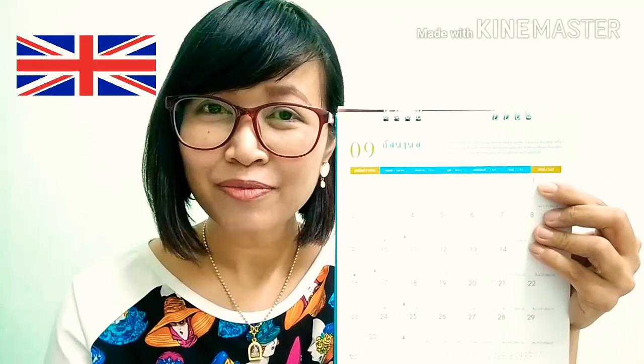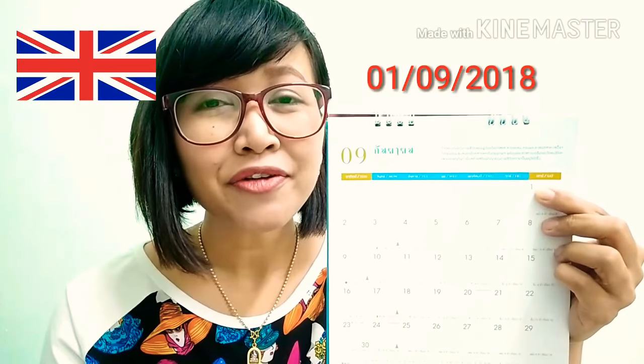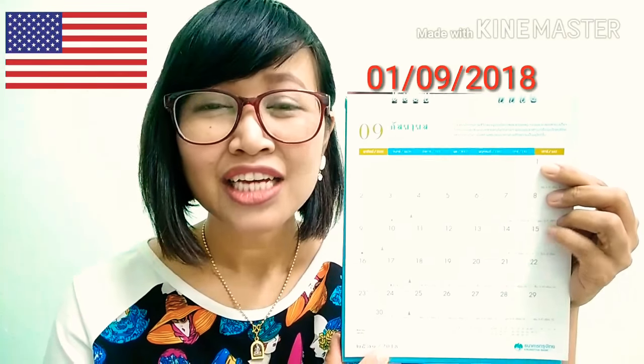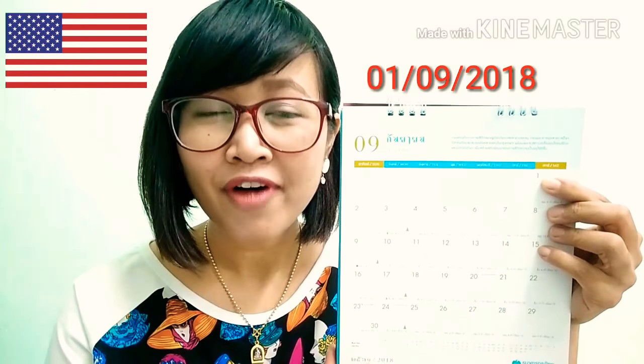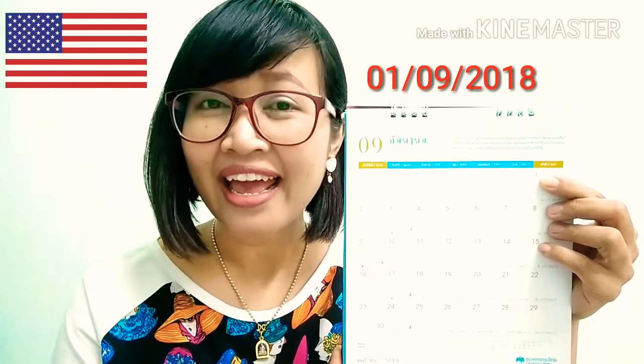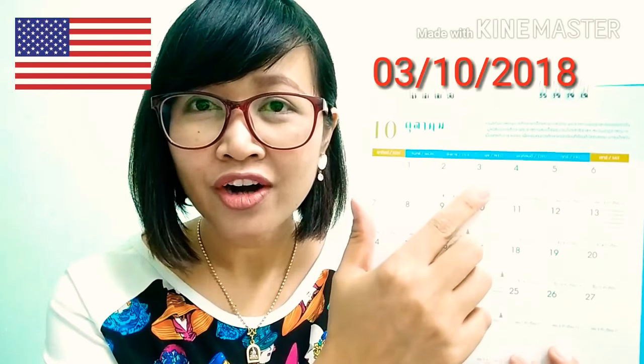What's the date today? Today is the 1st of September 2018. What's the date today? Today is the 3rd of October 2018. Today is October 3rd 2018.